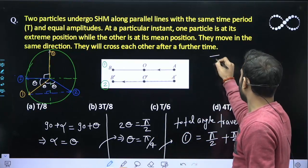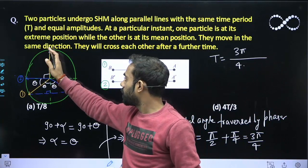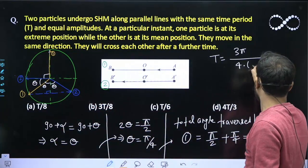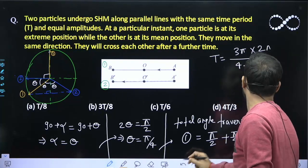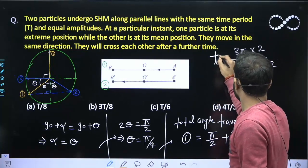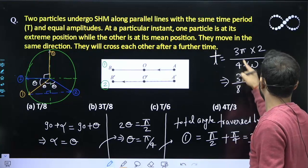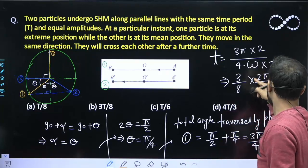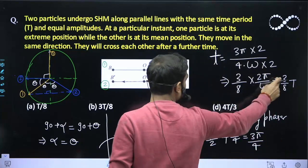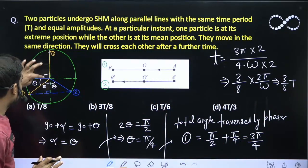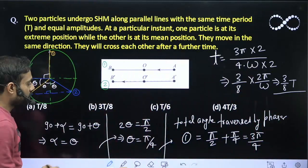I need to find the time. The time equals the total angle moved, which is 3 pi by 4, divided by the angular speed omega. Multiplying numerator and denominator by 2, and noting that 2 pi by omega equals T, this becomes 3 upon 8 times T. So after time 3T/8, phasor 1 will come from here to here, and at this instant the two particles will cross each other. The answer is 3T/8. Option D is correct.